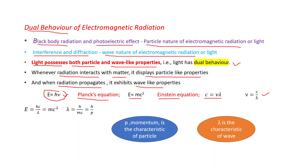Replacing ν with c/λ in Planck's equation gives E = hc/λ. Since E = mc², we get hc/λ = mc². Rearranging: λ = h/mc, where mc is momentum (p), so λ = h/p. Here λ is a wave characteristic and p is a particle characteristic — this relationship correlates the particle nature and wave nature of the photon or radiation.